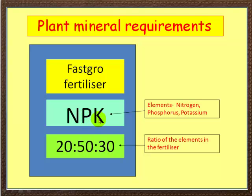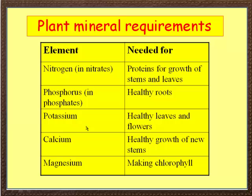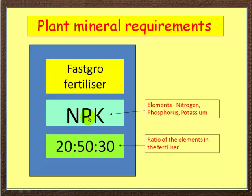The farmer can specify a particular ratio. In this example, there's 20% nitrogen, 50% phosphorus, and 30% potassium. The farmer has identified that the biggest need is for phosphorus — remember, phosphorus is for healthy roots. So the ratio is heavily weighted towards phosphorus, with some potassium and a little nitrogen. Farmers can dictate exactly what they want in terms of plant minerals.